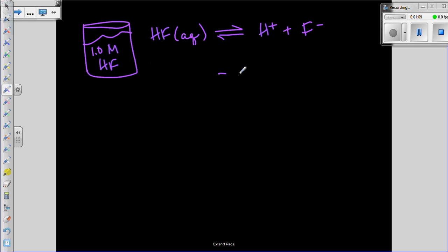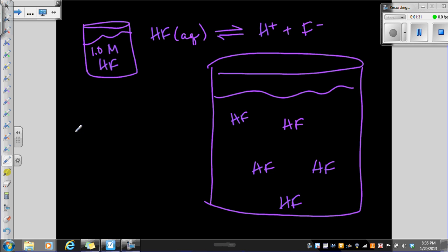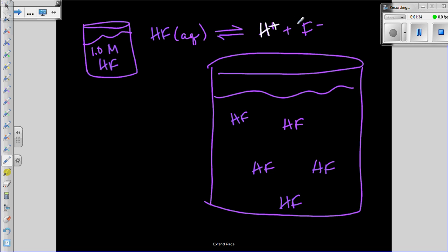So I'm going to draw a bigger picture of this. So I've got water. I have some hydrofluoric acid molecules. Let's just do five even though there's way more than that and then I have a very small amount of hydrogen ions and fluoride ions so I'm just going to do one of each because that's a smaller amount.